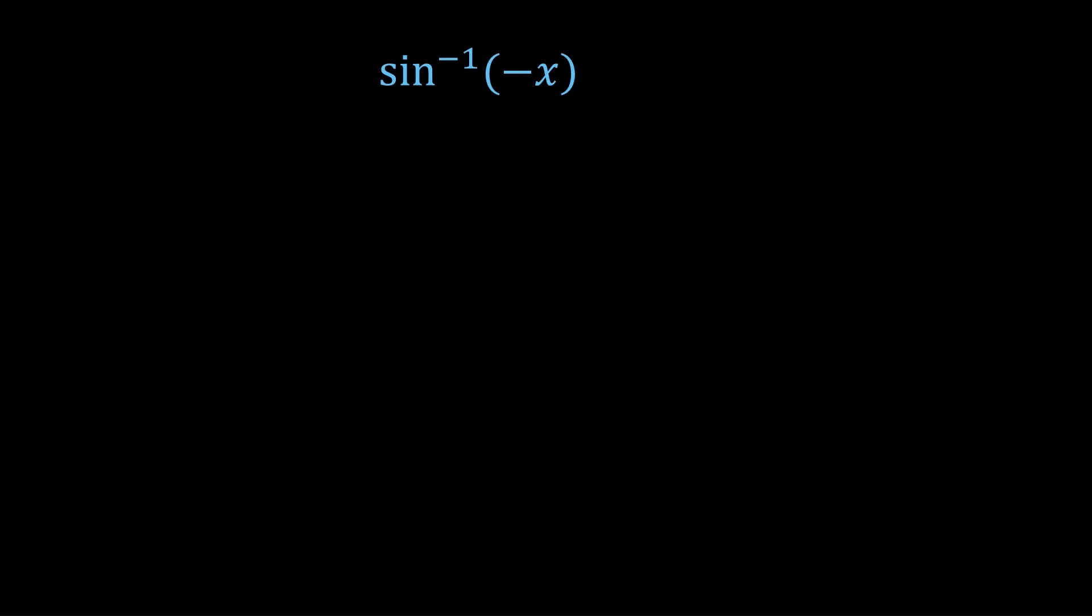Firstly, we let it be equal to y. And just keep in mind that y is in minus π on 2 to π on 2, because that is the range of sin inverse. Now we take sin of both sides, giving us minus x is equal to sin y. So x is equal to minus sin y.